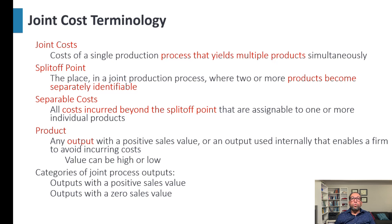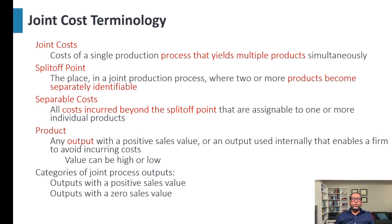A product is defined as any output with a positive saleable value, or any output used internally that enables a firm to avoid incurring costs. The categories of joint process output include: output with a positive saleable value, and output with zero saleable value. Sometimes it can even have a negative saleable value because we must treat a byproduct before disposing of it — for example, before dumping it in a river or soil — and that processing cost gives it negative saleable value.